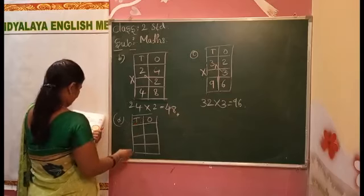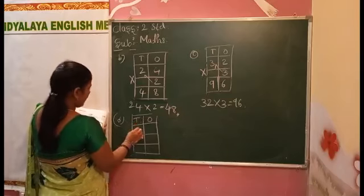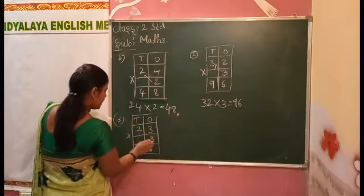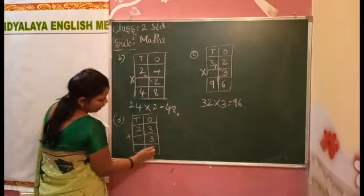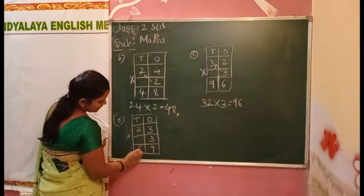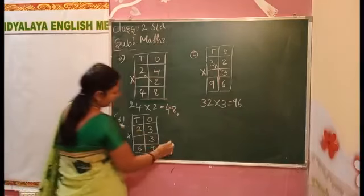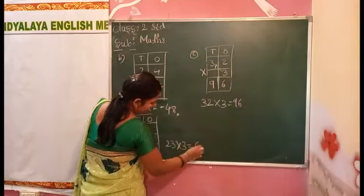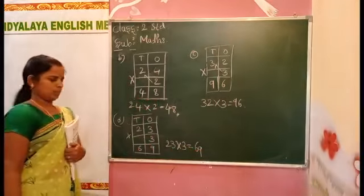Ones, tens. Next, twenty-three into three. Now here, three threes are how much? Nine. And three twos are six. Total means twenty-three into three equal to sixty-nine.